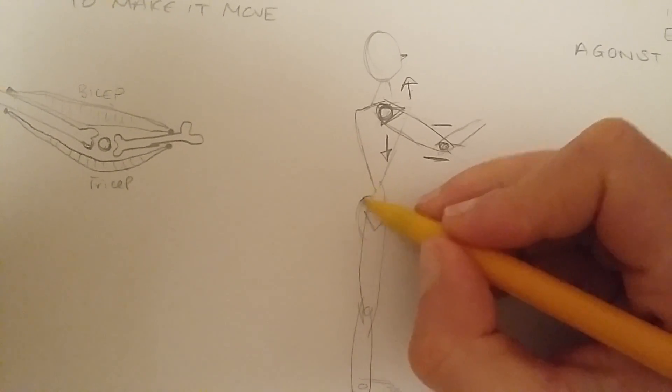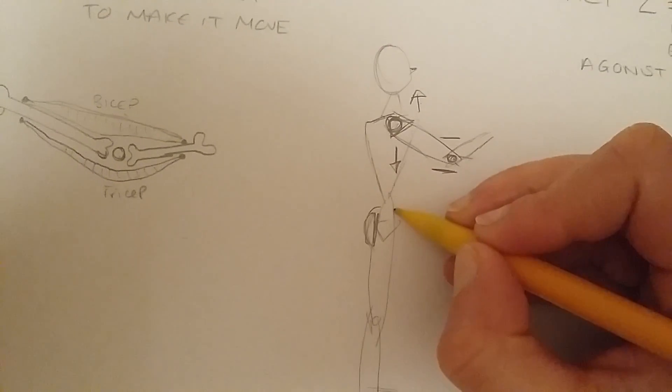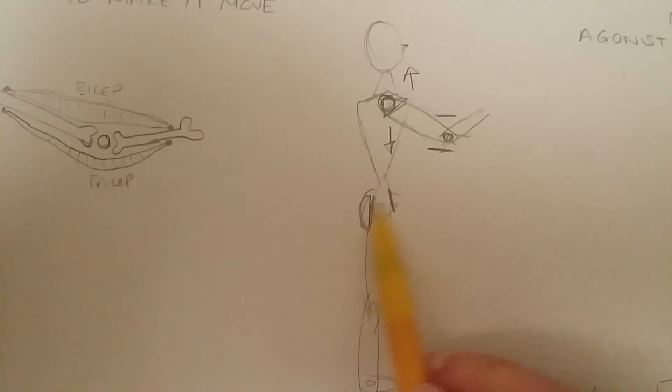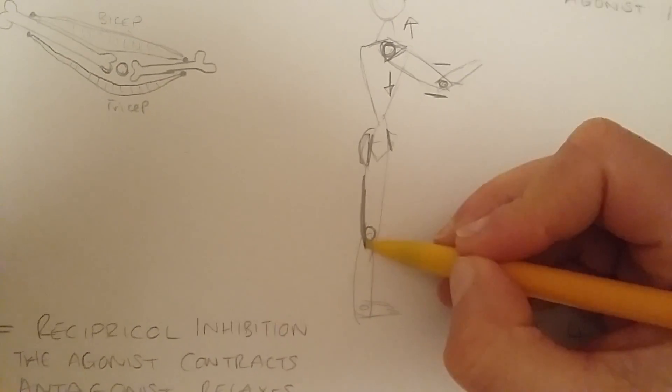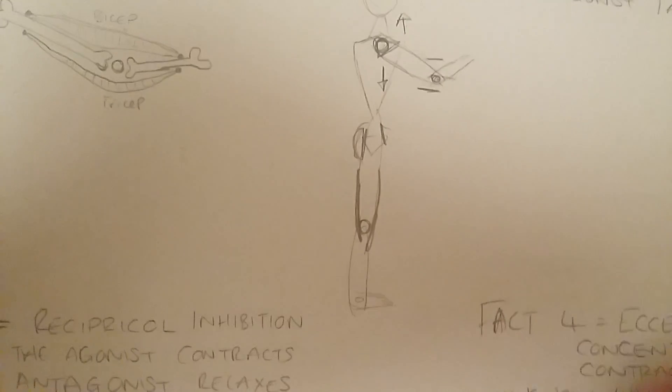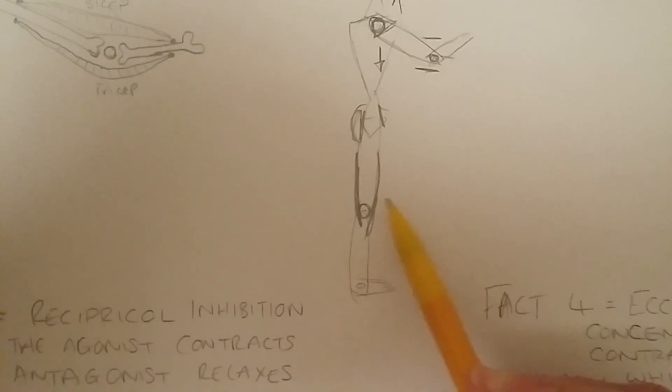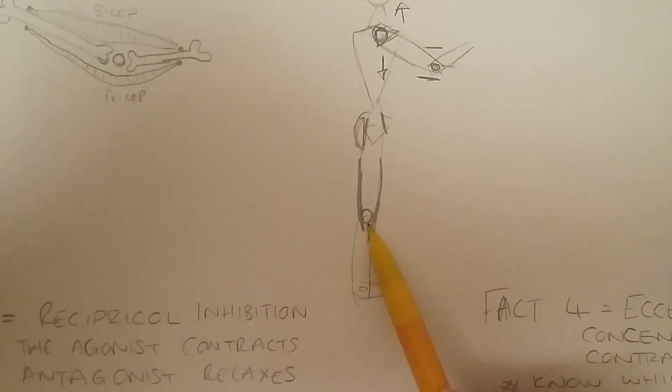Then you've got around the hips, you've got your glutes and your hip flexors. Now those are agonist-antagonistic pairs. Then down here around your knee, you've obviously got your hamstring and your quad. They both run either side of the knee to cause you to flex and extend your knee.